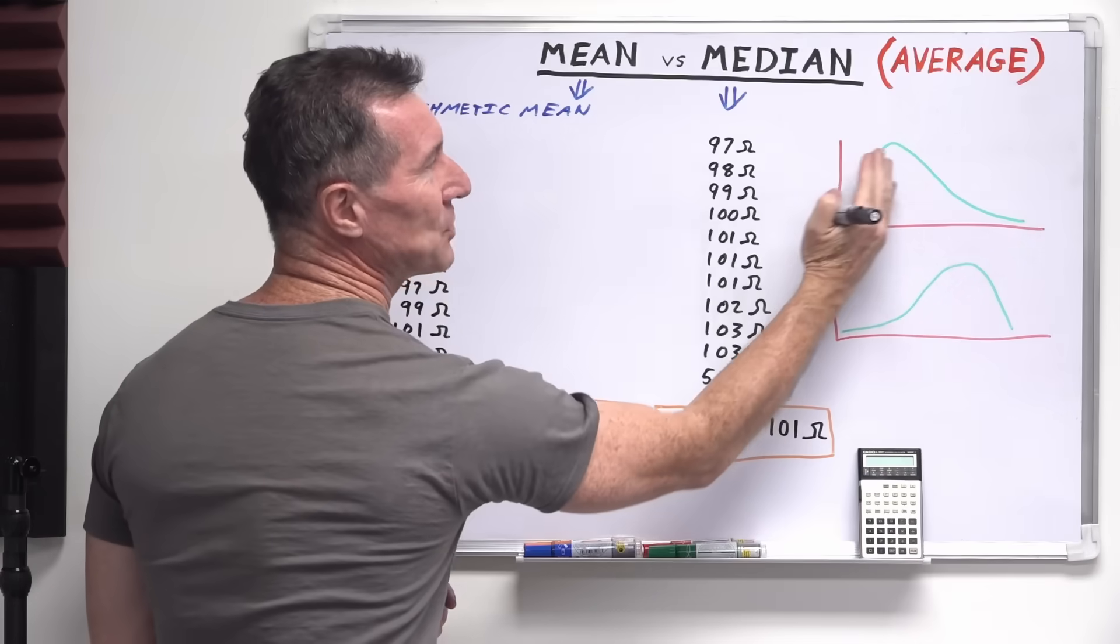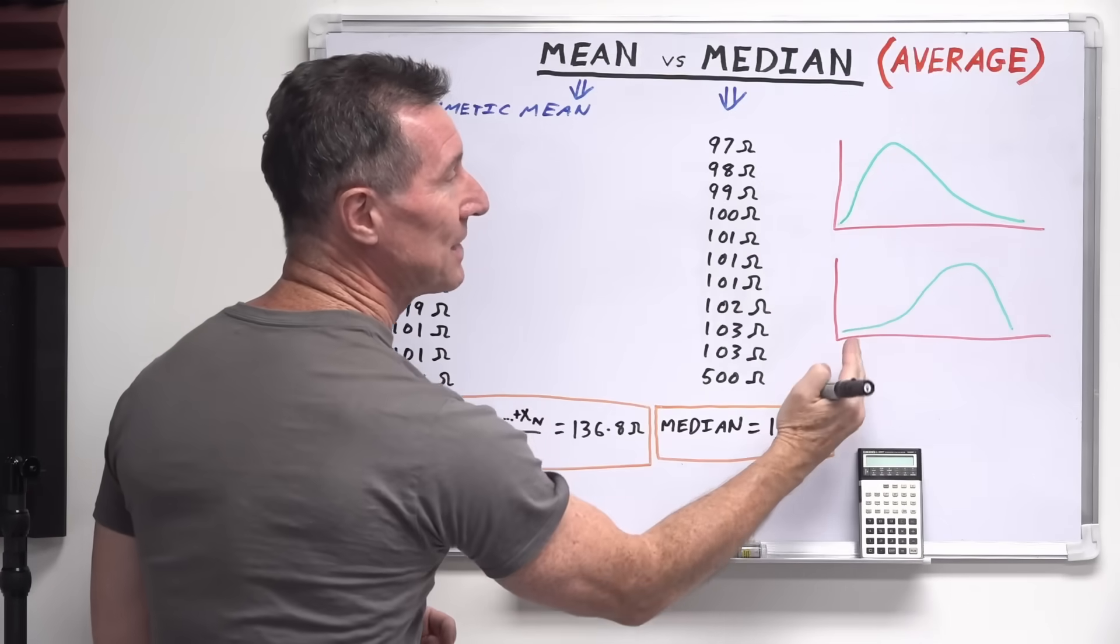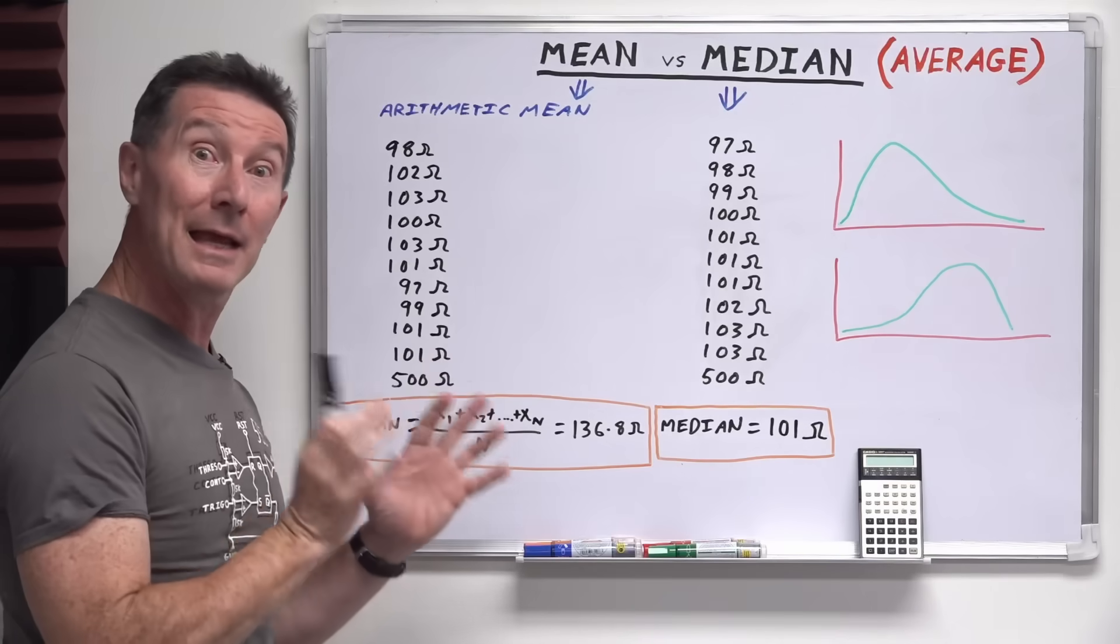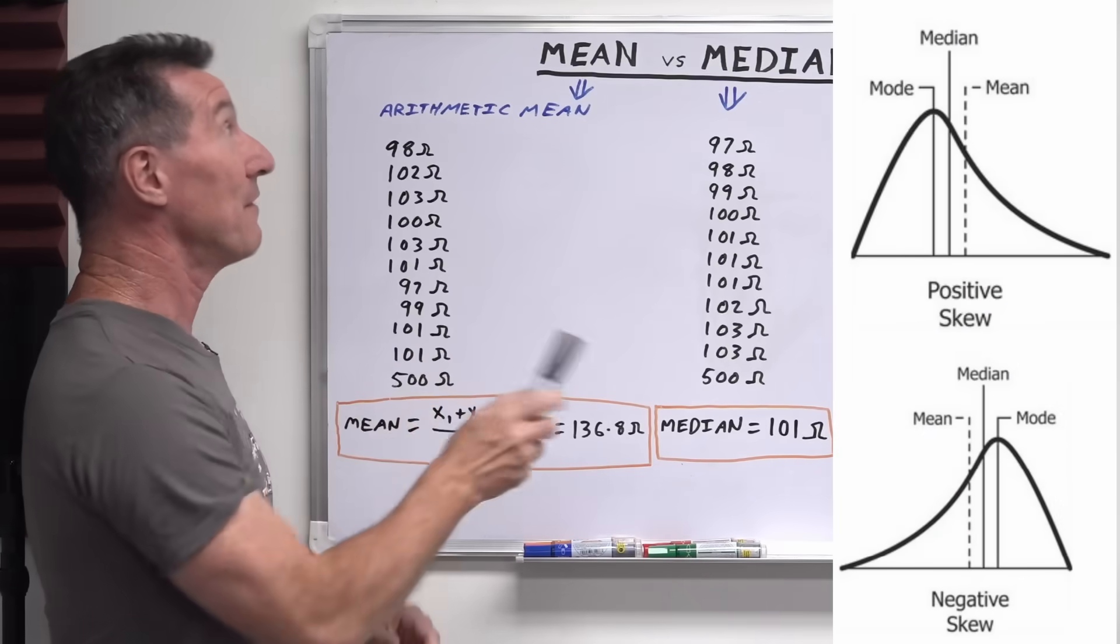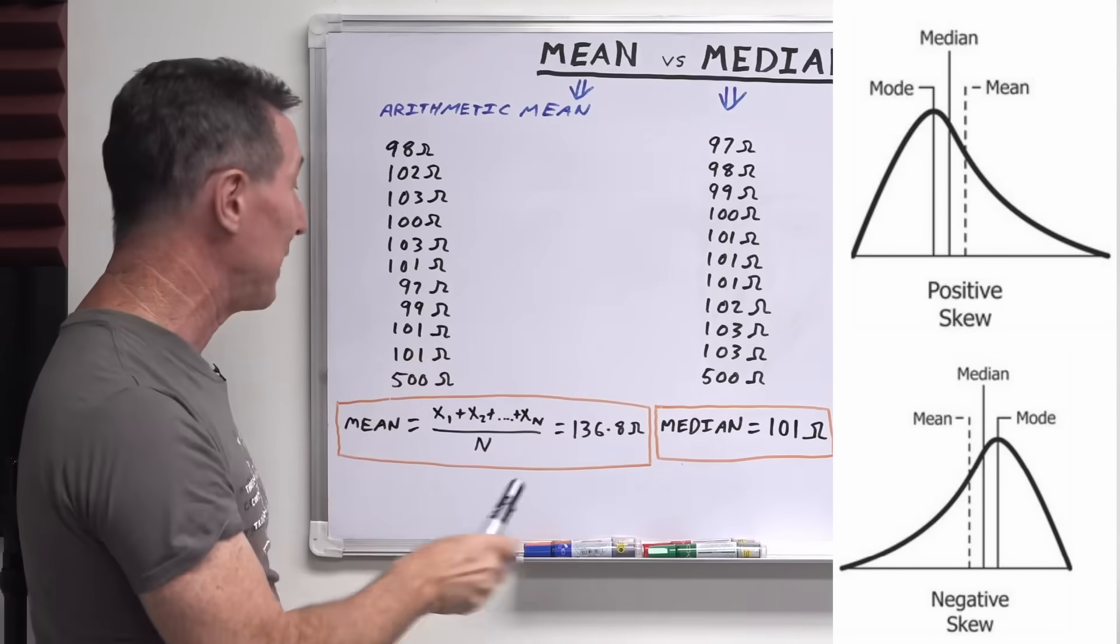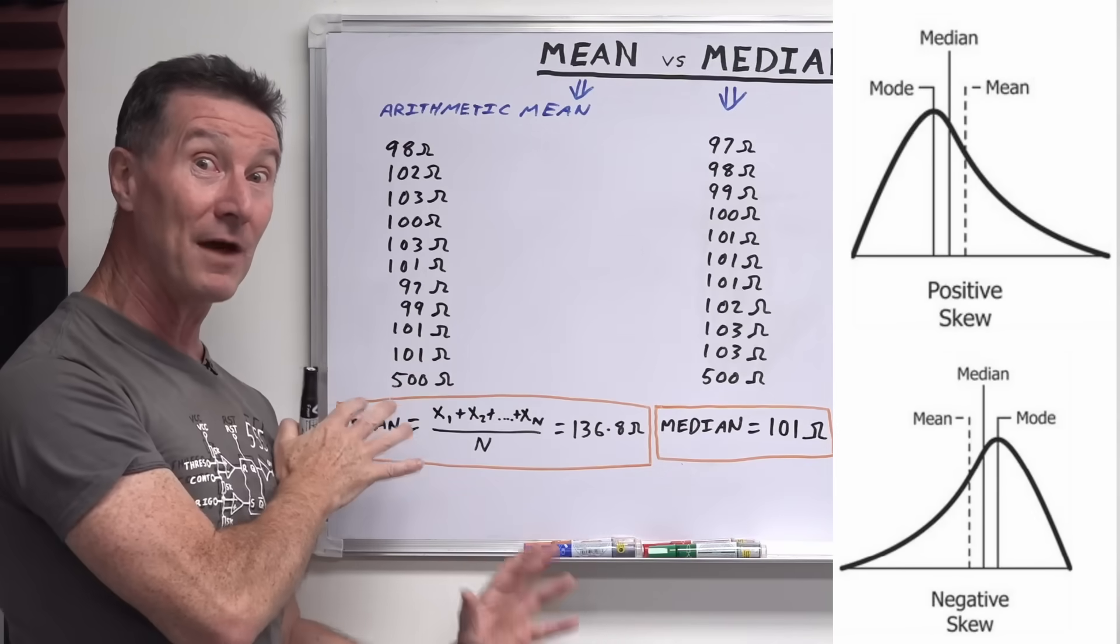You can see that the data is sort of bunched up one end here, or in this particular case the data is all bunched up in the other end here. And it can make quite a substantial difference whether you use mean or median when your data is skewed one direction or the other, or you've got big outlying values.